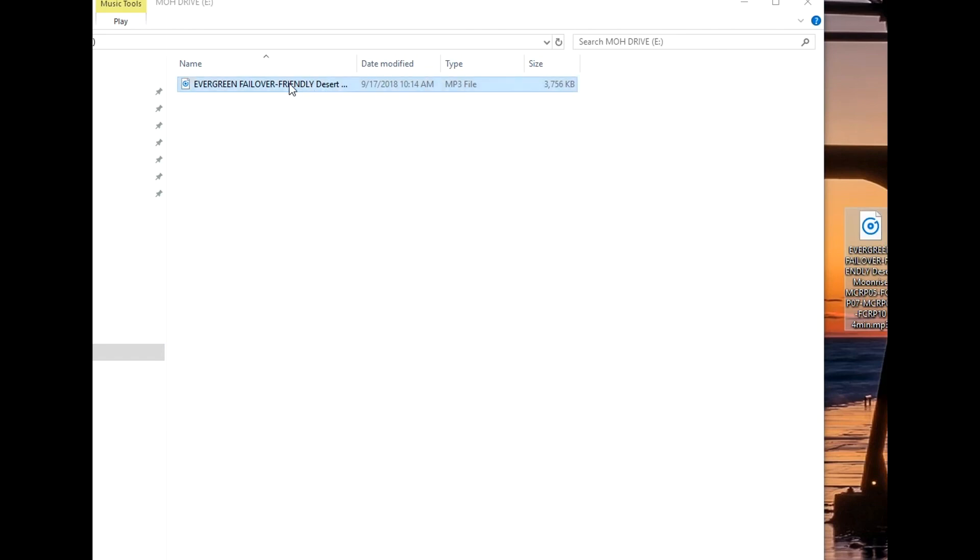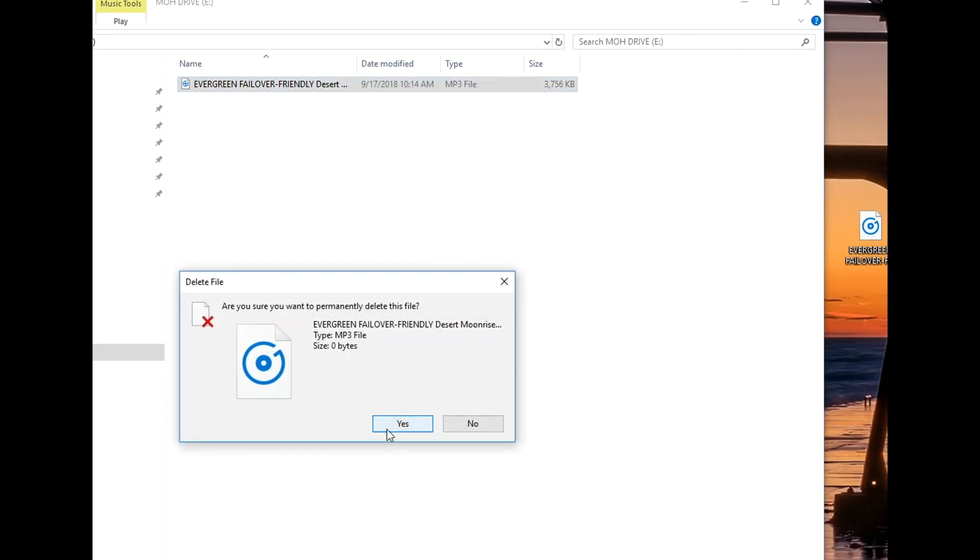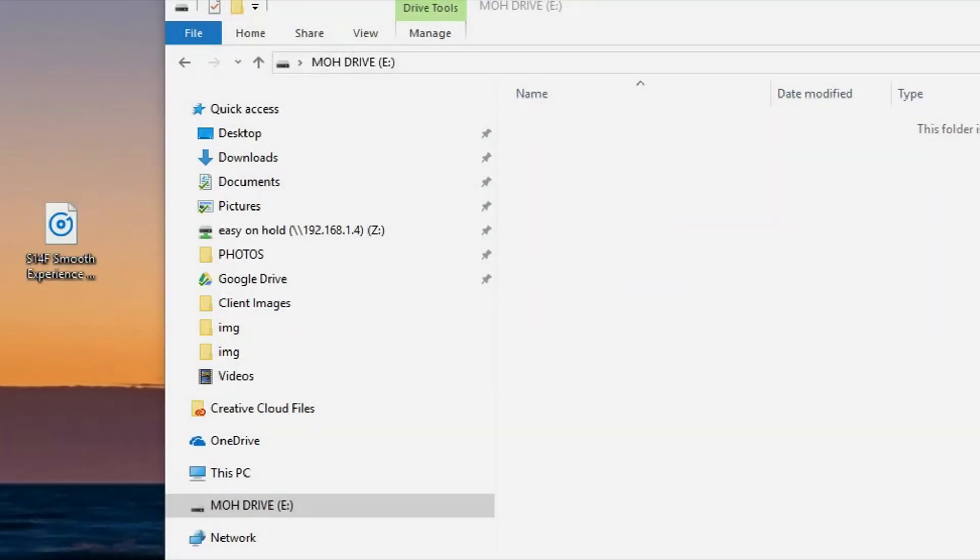Your audio device will play any and all MP3 files that are on the drive. For now, we only want the one new file to play, so we'll delete the old file to clear the drive. Now that the drive is empty, we'll drag the new file onto the USB drive. Now the drive is ready to be placed into the player.